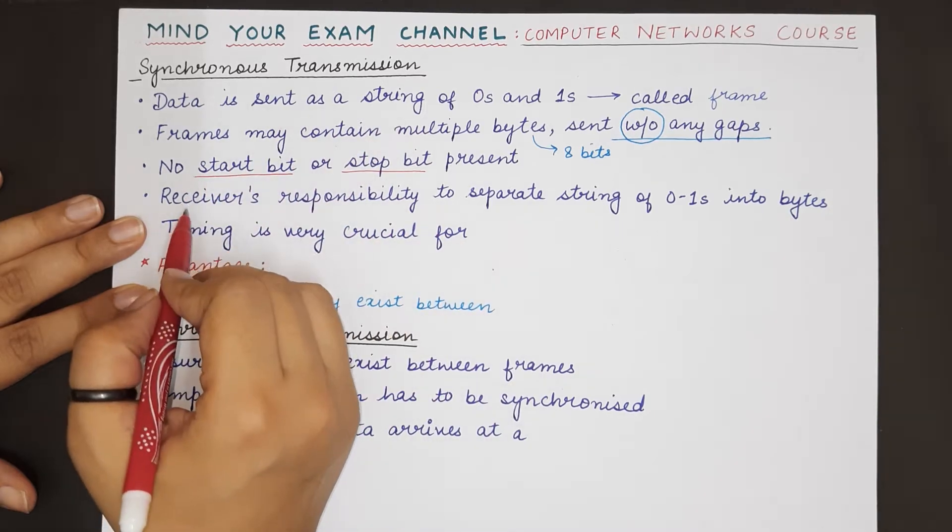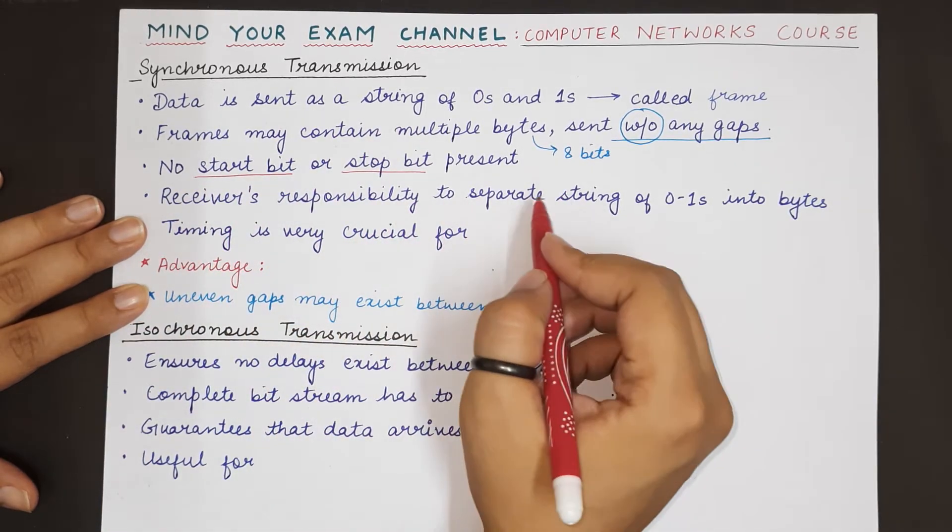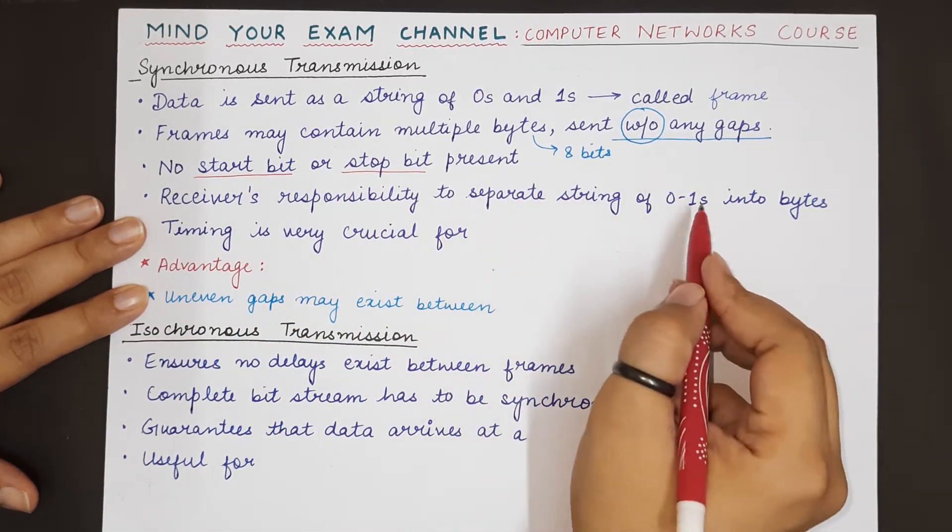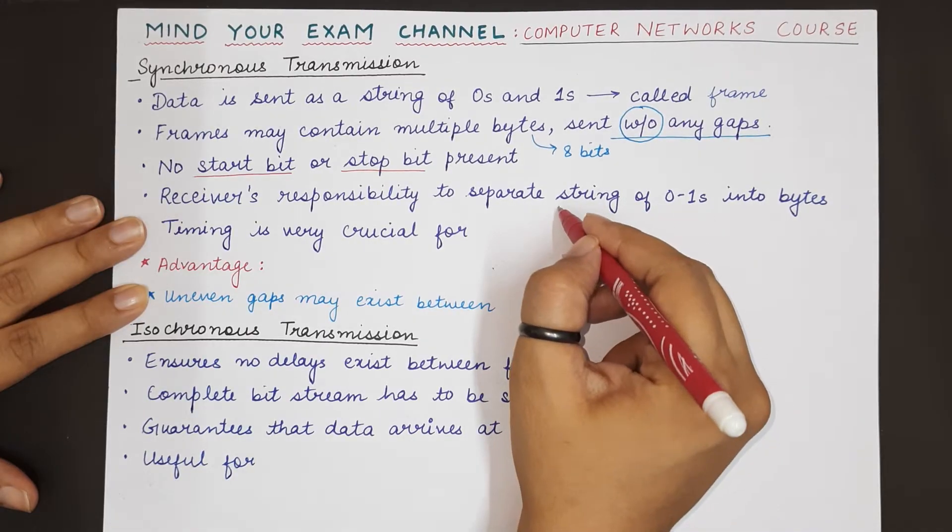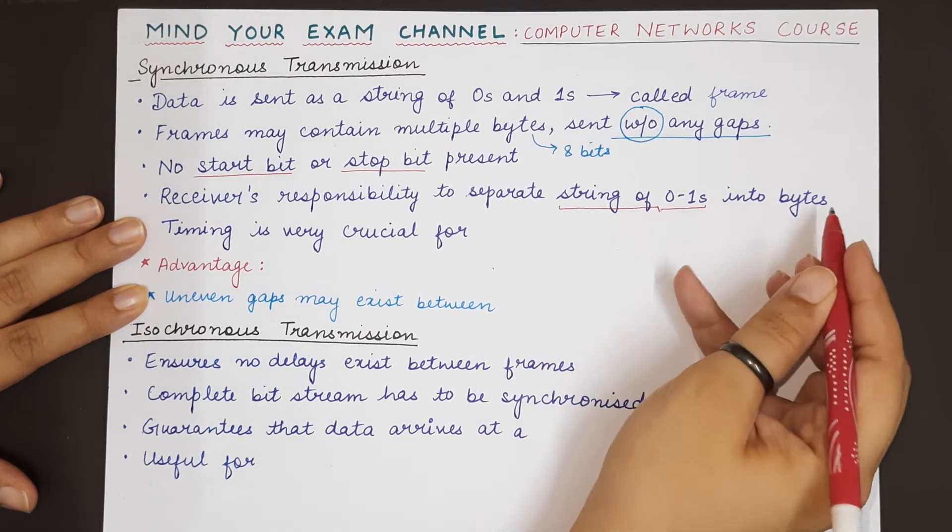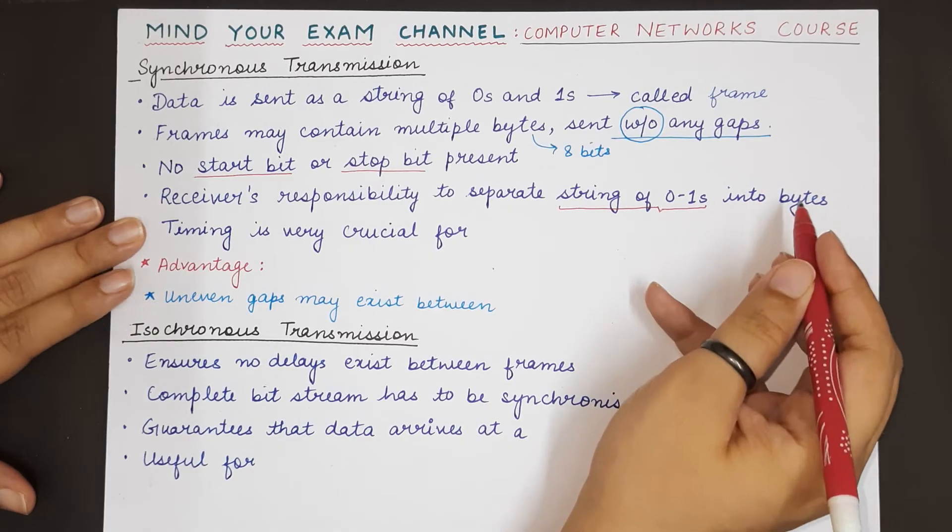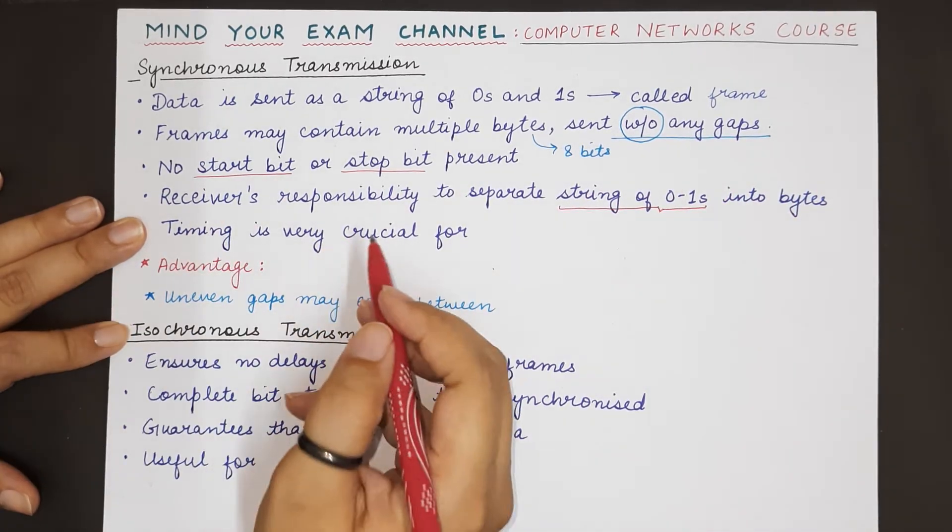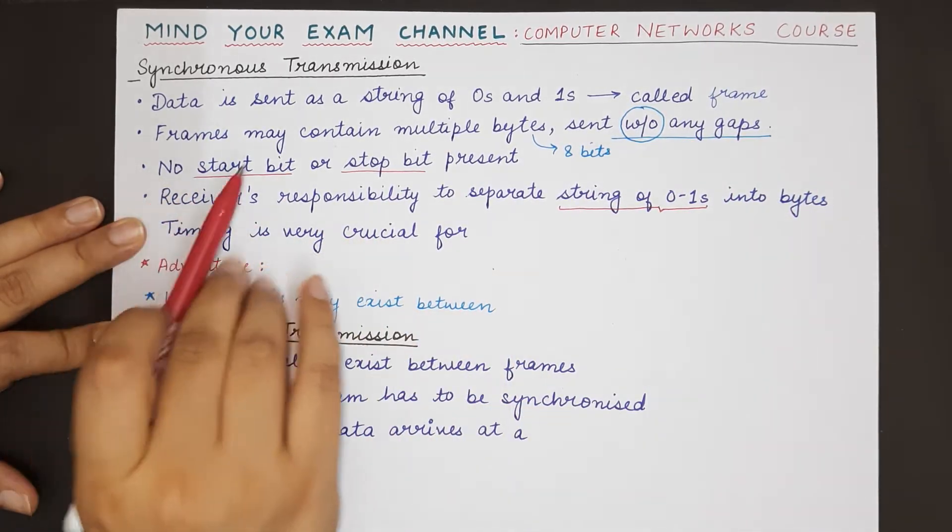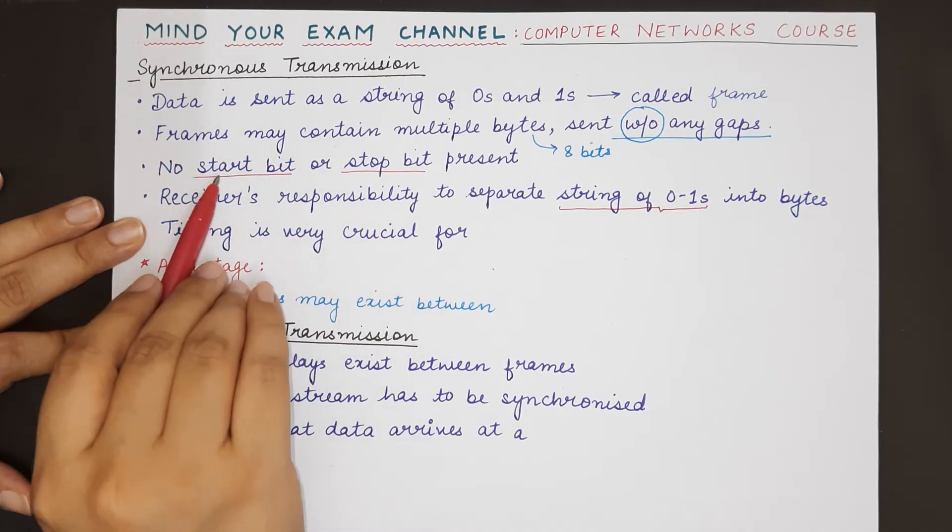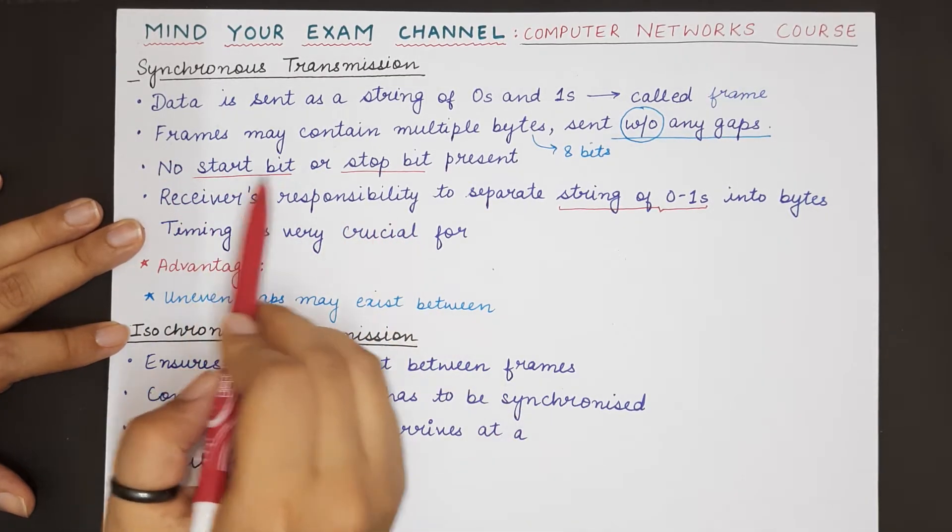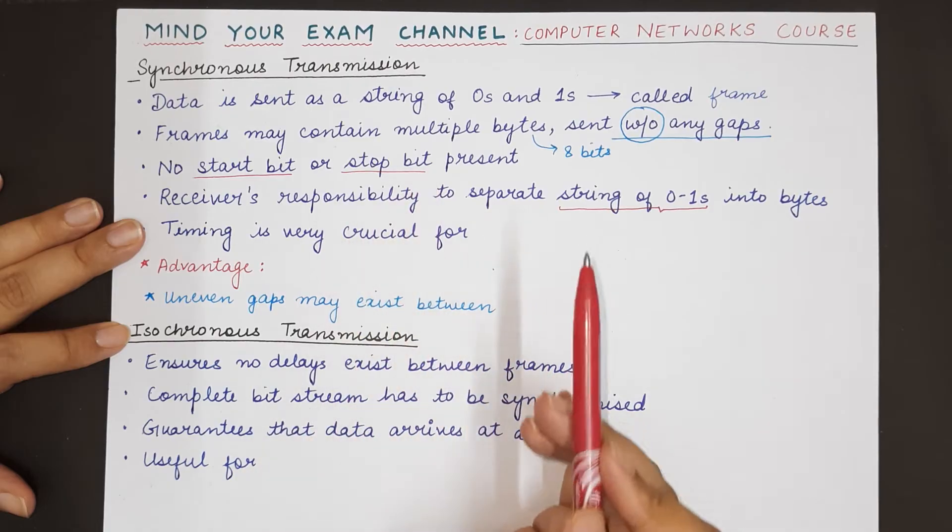Therefore, it is the receiver's responsibility to separate the entire string of zeros and ones—to break down the frame into individual bytes. The receiver's role becomes very important because there is no explicit bit that tells about the starting or stopping of the transmission.